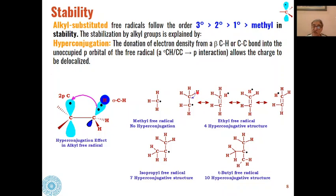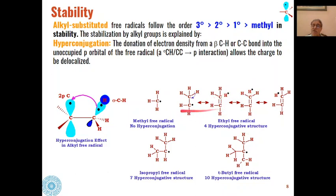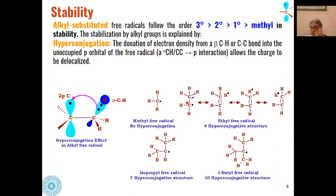In the ethyl radical, there is a possibility of three hydrogens giving three hyperconjugative structures, so overall four structures are possible including the main one. The methyl free radical has only one structure; the ethyl free radical has four. More the number of hyperconjugative structures, higher is the stability of that free radical. That is why the ethyl free radical is more stable than the methyl free radical.